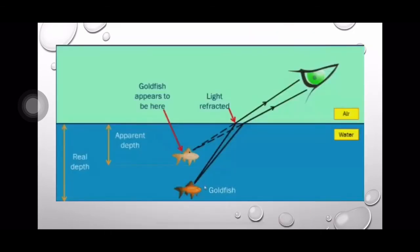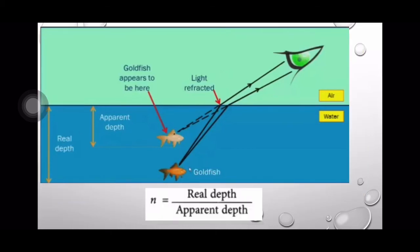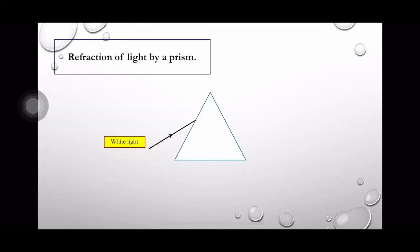Look at these diagrams. When we look at objects submerged in water, we see them closer to the surface of the water than where they really are. This is called their apparent depth. The real depth of the object is farther down. This also defines the refractive index of the medium where the object is submerged by the equation: n = real depth divided by apparent depth.